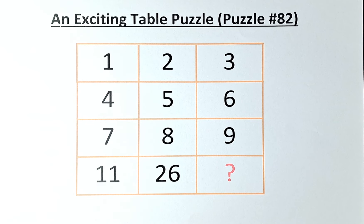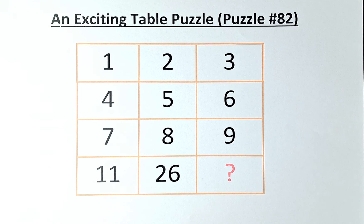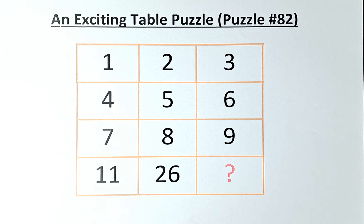Good day and welcome to puzzle number 82, which is 'find the missing number' in this exciting table puzzle. The numbers in the puzzle are as follows: in the first row we have 1, 2, and 3; second row, 4, 5, and 6; third row, 7, 8, and 9; and in the final row we have 11, 26, and the question mark. We need to know what number can be represented by the question mark.